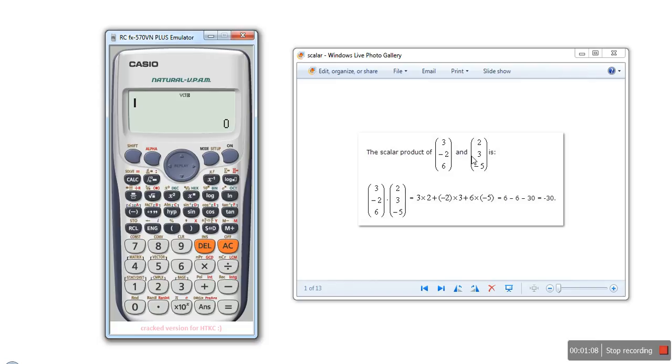Now we need to enter another vector. We are in the vector mode. If you want to see the menu, press shift key and then press 5. Because on 5 vector is written. This key with shift will work as a menu for vector.